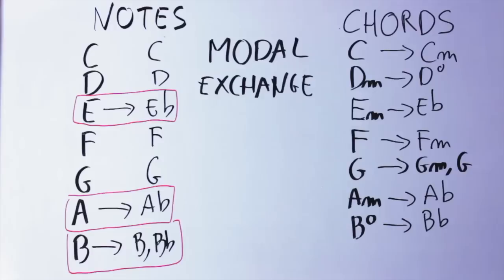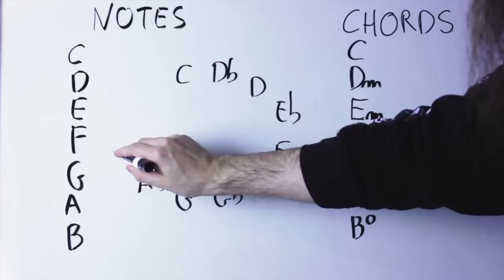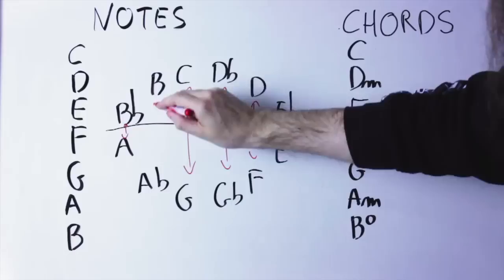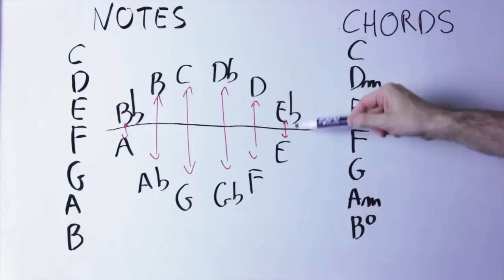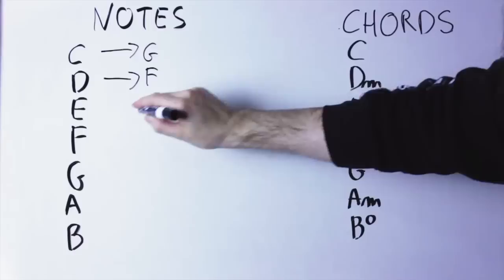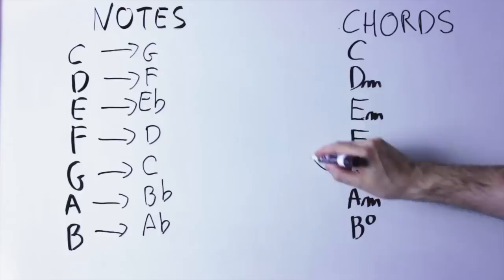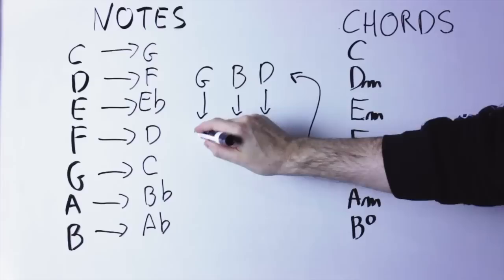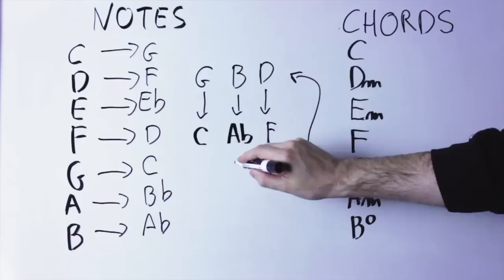In negative harmony, on the other hand, we change the notes in a different way. As we have seen in the other video, we flip the scale around a very specific axis, and so every note goes into a different note. For instance, the C note becomes a G note, the D note becomes an F note, E becomes E flat, F becomes D, G becomes C, A becomes B flat, B becomes A flat.